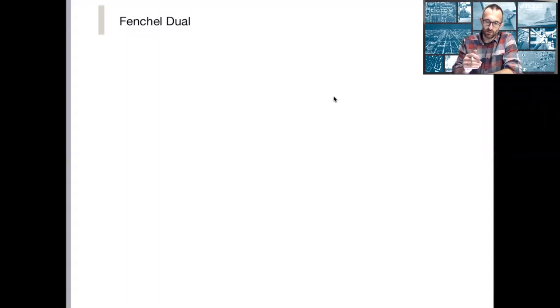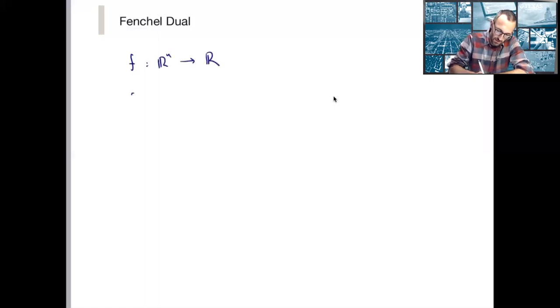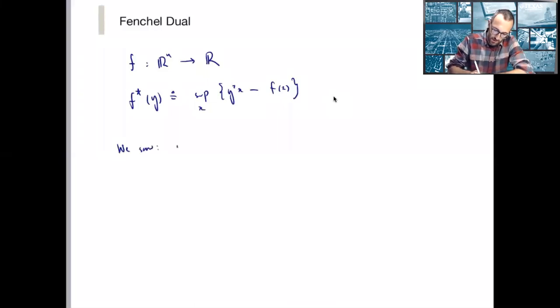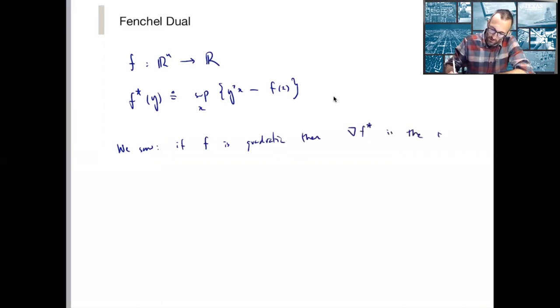We've given the following definitions so far. If f is a function from R^n to R, its Fenchel conjugate is defined as the supremum of y transpose x minus f of x. We saw an example that if f is quadratic, then the gradient of f star is the inverse of the gradient of f.